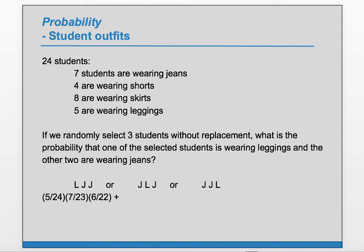Plus J, L, J: that's 7 out of 24, times 5 out of 23 left, times 6 jeans out of the 22 students left. And then plus J, J, L: similarly, it's 7 out of 24, times 6 out of 23, times 5 out of 22.